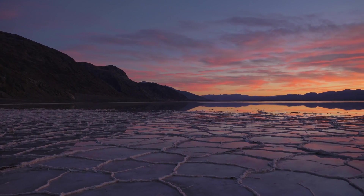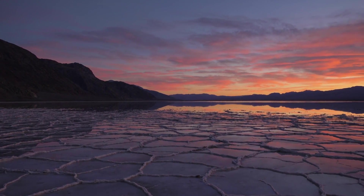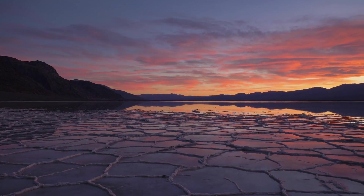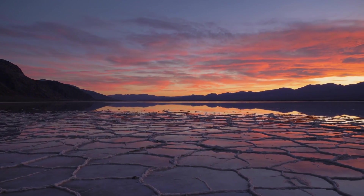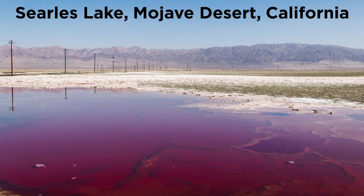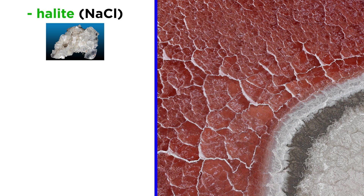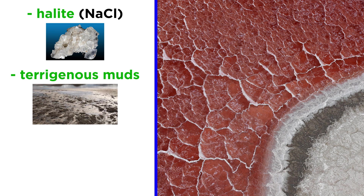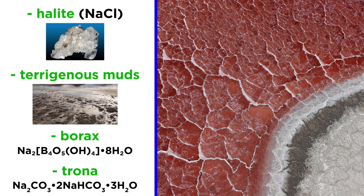In modern times, most evaporite deposits are formed in saline lakes, which may or may not periodically dry up. An example of this is Searles Lake, which is located in the Mojave Desert of the southwest United States. The sediment that accumulates in the lake is primarily halite, interbedded with terrigenous muds that are carried in during the wet season. There are also some layers of borax and trona, which are mined for boron and soda ash respectively.